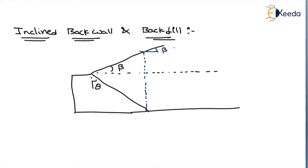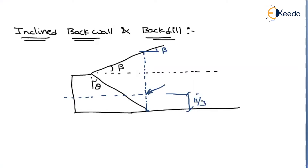Now how will we proceed? Because of this inclined surcharge, the pressure will act at a height of h/3 from the bottom. What about the magnitude? If the surcharge were horizontal, it would act horizontally, but here the pressure acts in an inclined way. Let us assume the magnitude is P1 and it is inclined by an angle beta.